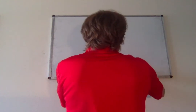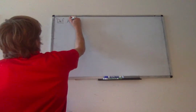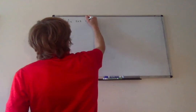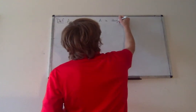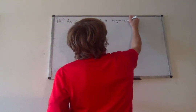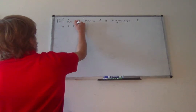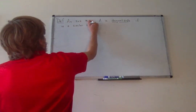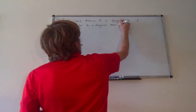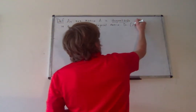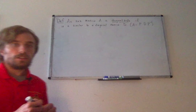We should define our main definition of the video. An n by n matrix A is diagonalizable if it is similar to a diagonal matrix D. Remember this means that A equals P times D times P inverse, where P is an invertible matrix.